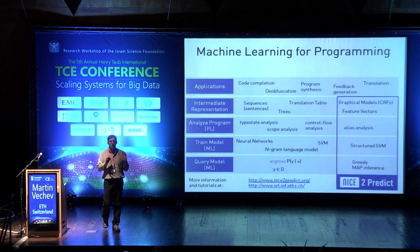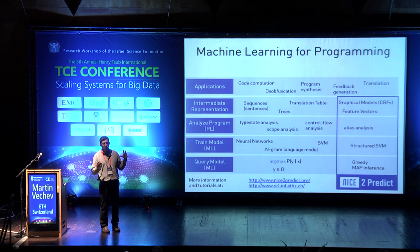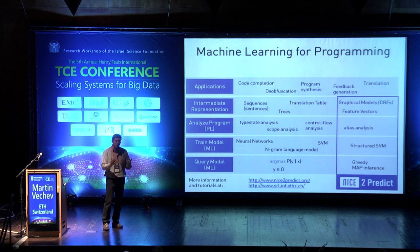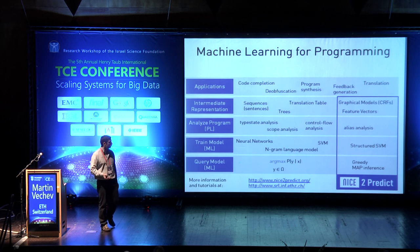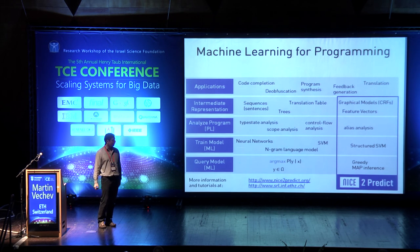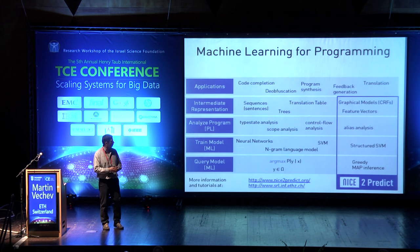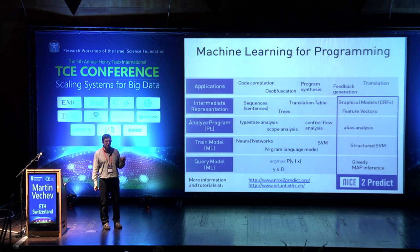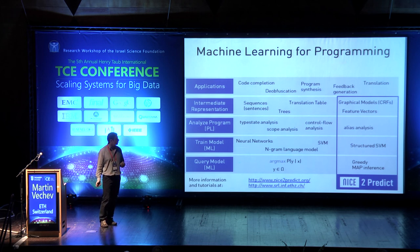I hope this gives you an idea of the scale we work with, the probabilistic models we use, the kind of analysis we use, and how these things combine in building probabilistic programming tools. If you want to find out more, you can go to Nice2Predict, get the framework, and start building your own tools, or go to the website to find more about the publications and techniques. In the next few minutes I want to tell you where I'd like to see some of this research go in the next five to ten years.